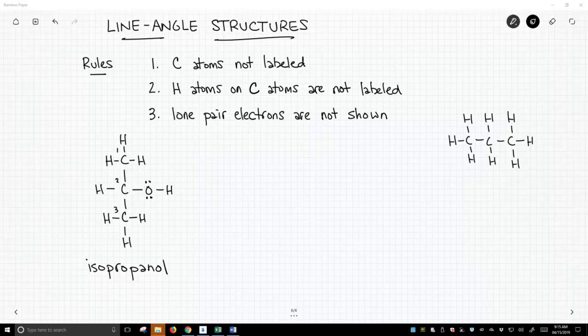Rule number two, hydrogen atoms on carbon atoms are not labeled. So carbon is so predictable in having four bonds that we're going to assume if we seem to be missing bonds on carbon, those missing bonds must be bonds to unshown hydrogen atoms.